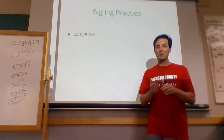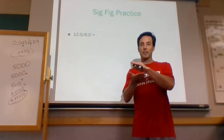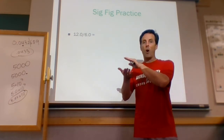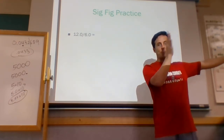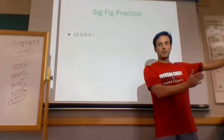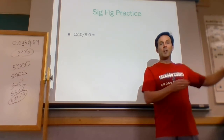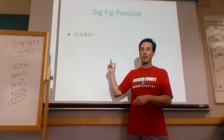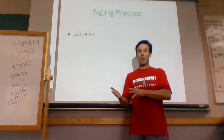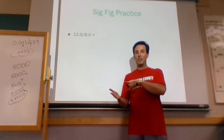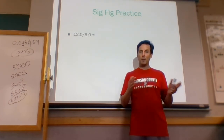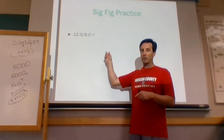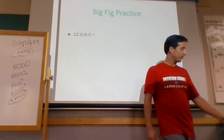Sometimes your calculator is going to give you all the decimal places and you've got to decide where to chop it off. Sometimes your calculator is going to chop it off and you need to add more decimal places. It can go either way, and a lot of times people forget about that.